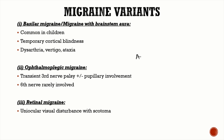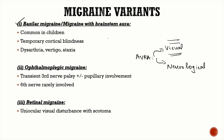Migraine variants occur when the aura presents as neurological deficits. Basilar migraine, or migraine with brainstem aura, presents with brainstem dysfunction including temporary cortical blindness, dysarthria, vertigo, and ataxia — common in children. Ophthalmoplegic migraine presents with transient third nerve palsy with or without pupillary involvement; the third cranial nerve is most commonly involved, rarely the sixth.